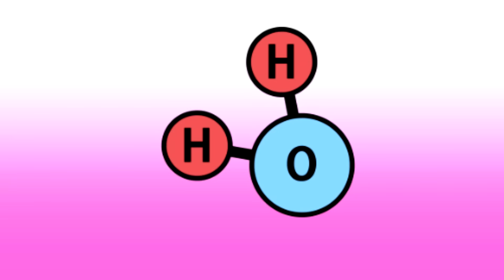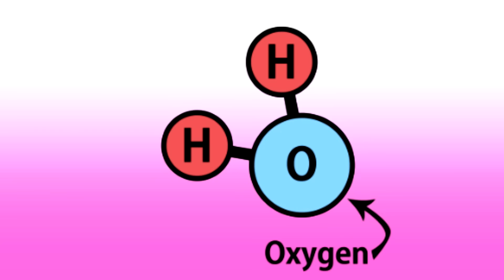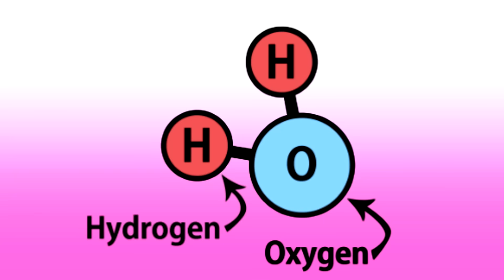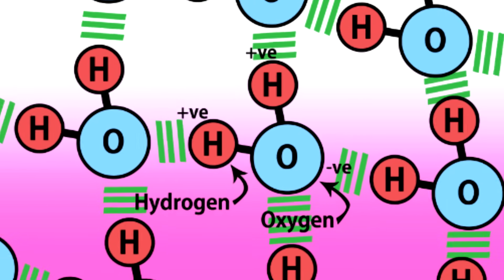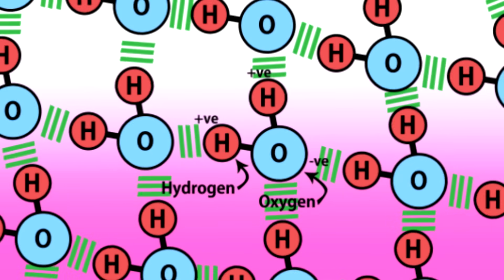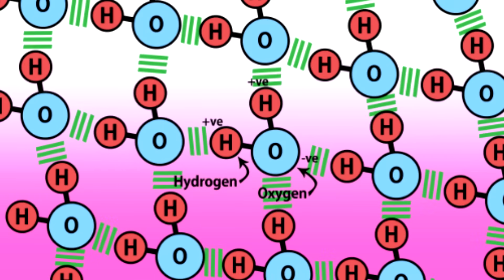Everybody knows that bubbles are made of soap and water. But on an atomic scale, much more is going on. Water molecules are made of oxygen and hydrogen. The hydrogen is slightly positive and the oxygen negative. This causes water molecules to be attracted to one another, known as hydrogen bonding, which gives water a surface tension.